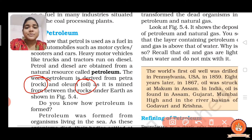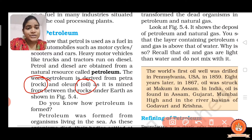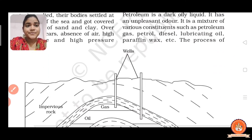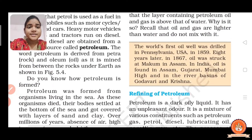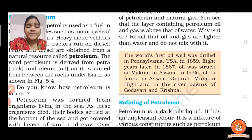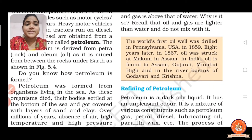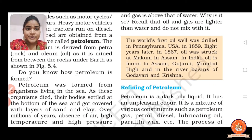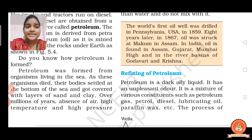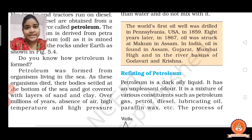Petra means rock and oleum means oil. Petroleum is mined from between the rocks under the earth, as shown in figure 5.4. Petroleum is a dark oily liquid from which we get many very valuable substances such as petrol, diesel, lubricating oil, paraffin wax, kerosene, etc.